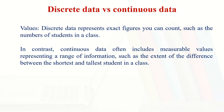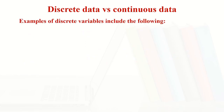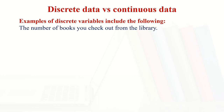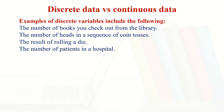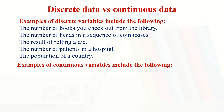Discrete data has no continuation — it is a particular number. Examples of discrete variables include: the number of books you check out from the library (maybe 20, 30, or 100), the number of heads in coin tosses, the result of rolling a dice (how many times a six or five comes up — probability analysis), the number of patients in the hospital (male or female), and the population of a country. All of these are discrete data.